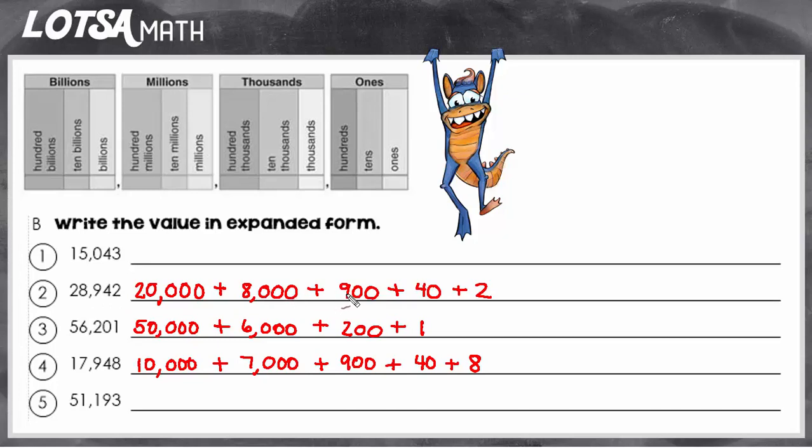The 9 has 2 zeros and 2 digits after it. The 4 has 1 digit after it and 1 zero. The 2 has no zeros and no digits after it. If you notice that pattern, that's a great way to check and make sure that you got each answer correct.